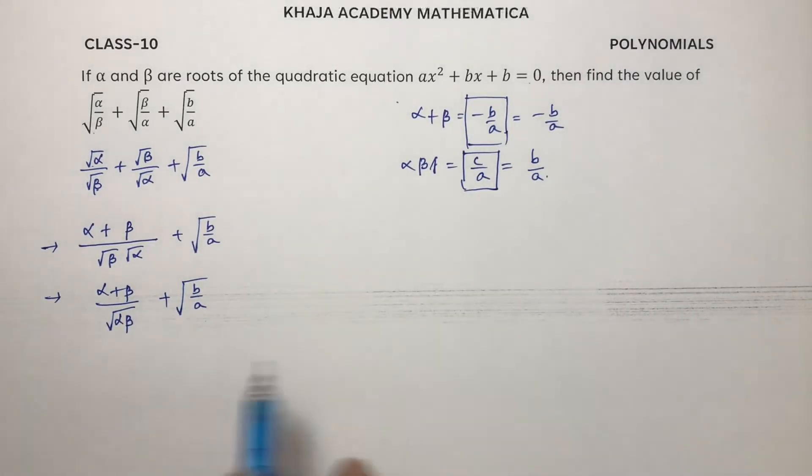If we substitute those values, alpha plus beta is minus b by a, by root alpha into beta is b by a, plus root b by a.